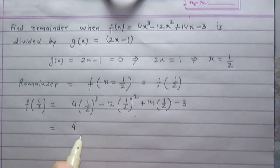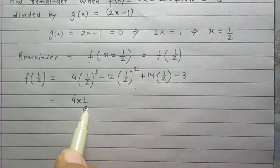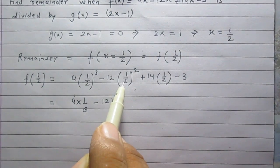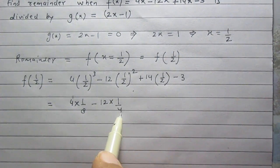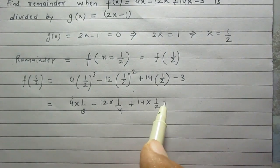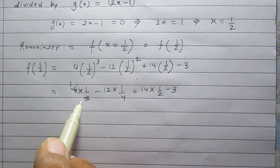So 4 multiplied by cube of 1/2, cube of 1/2 is nothing but 1/8, then minus 12 multiplied by square of 1/2 which is 1/4, then 14 multiplied by 1/2 and then minus 3. 4 in the numerator and 8 in the denominator.